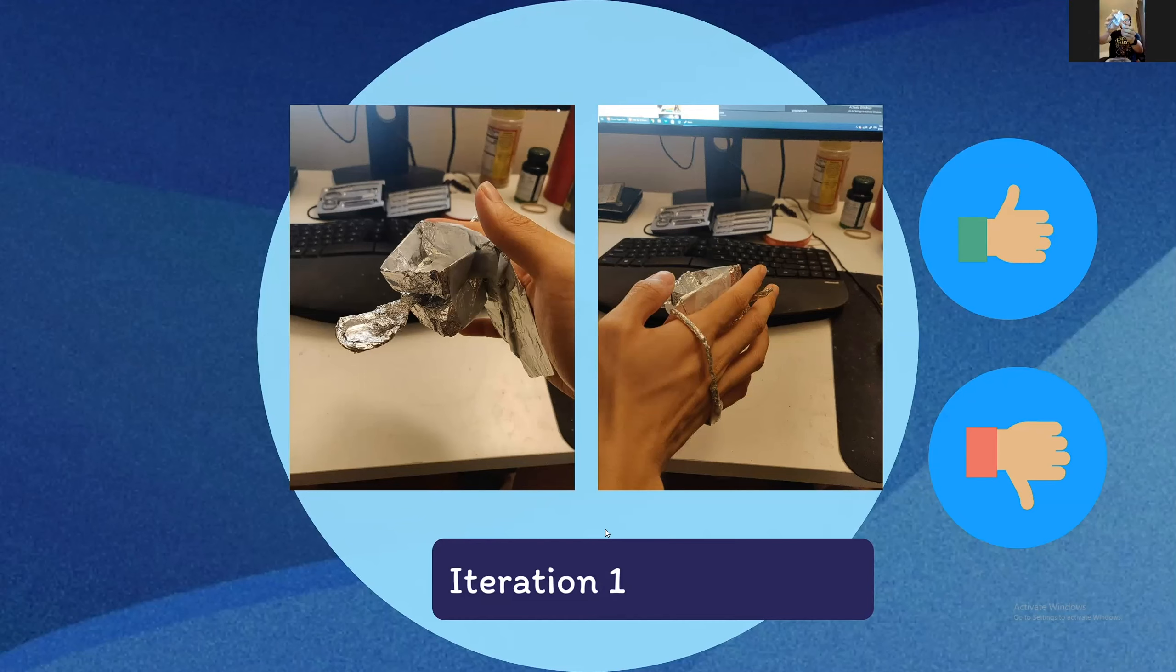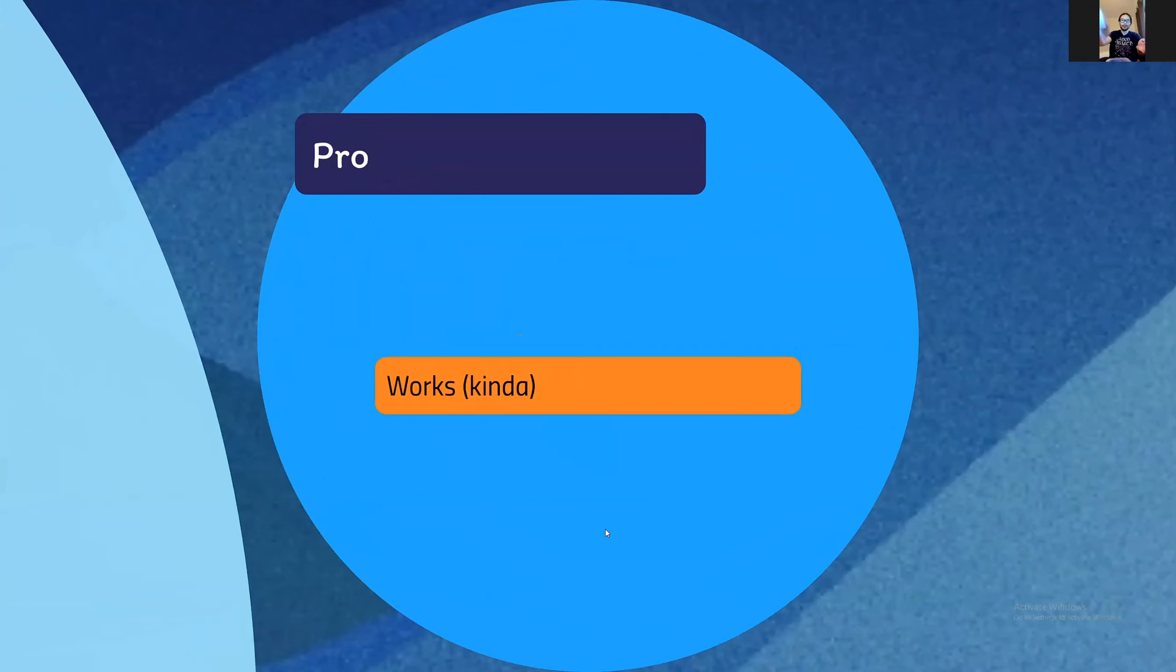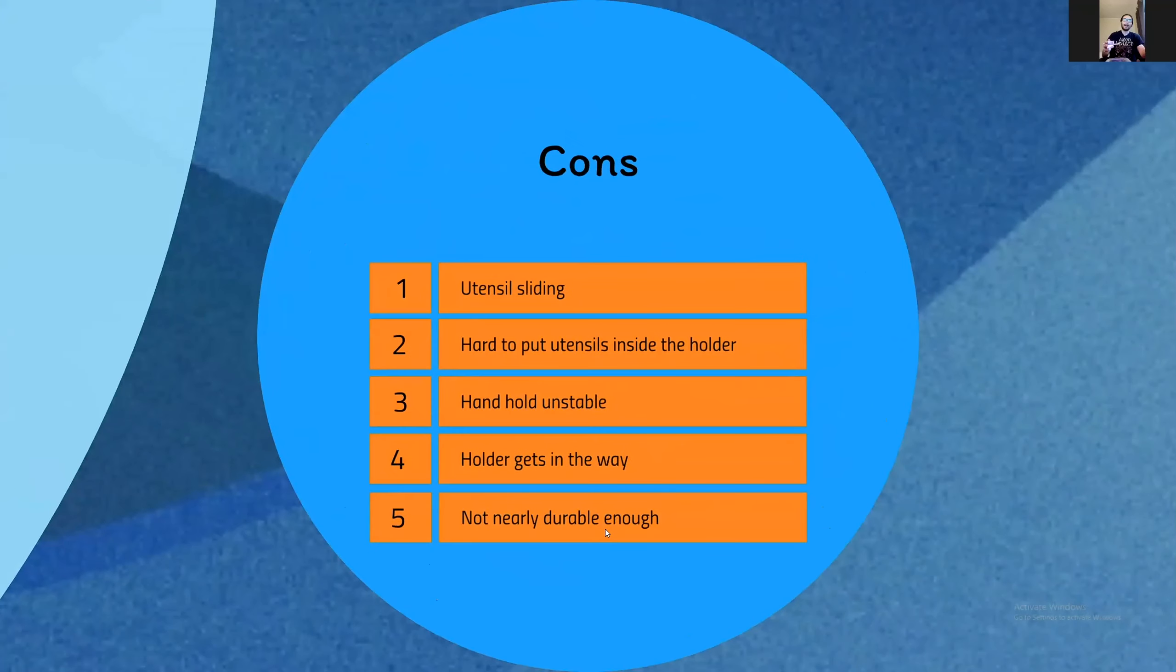The good thing is it kind of works. I am able to do the motion and it does feel more intuitive than the other device. But I immediately identified a lot of issues. The first issue is utensil sliding. We need a way to prevent the utensil from sliding, and we need to figure out how to easily put an utensil inside the holder. The next problem is we need a stable handhold. Right now the handhold is just like one strap which is not very stable. I noticed that while eating, sometimes the handhold gets in the way, which is problematic.